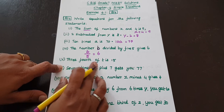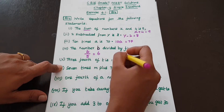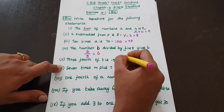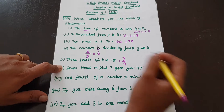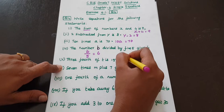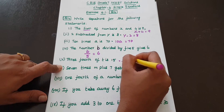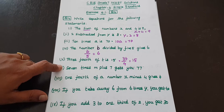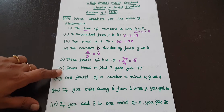Next: 3 fourth of t is 15. So 3 fourth of t — we write 3 over 4 multiplied by t — is equal to 15.